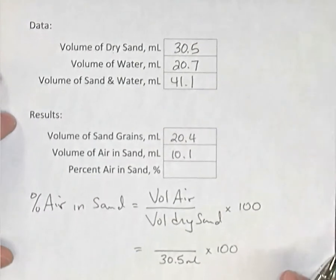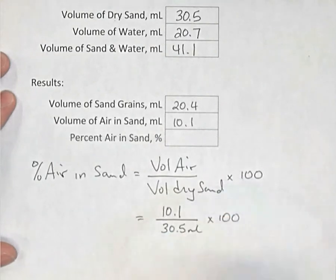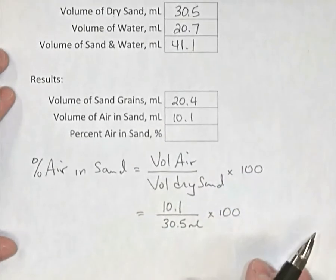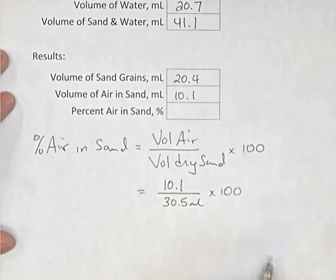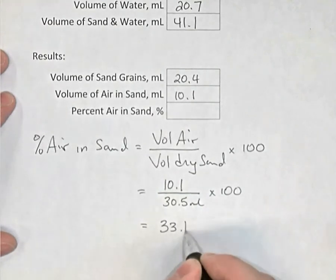And now I have enough information, I can take that volume of air, put it down here, 10.1 milliliters, divided by 30.5 milliliters, multiply by 100, this is going to give me 33.1% air. So the percent air in the sand was 33.1%.